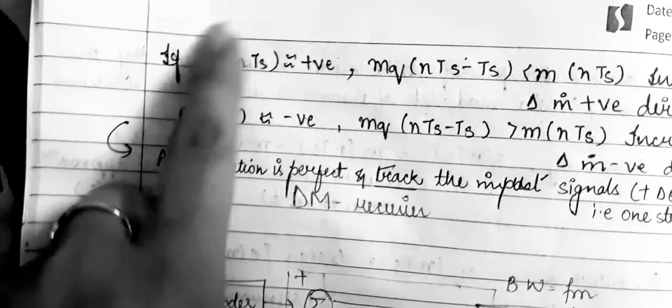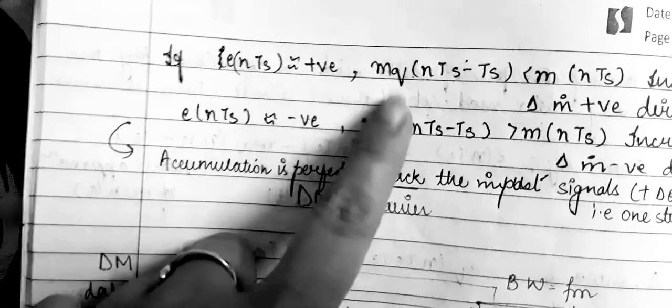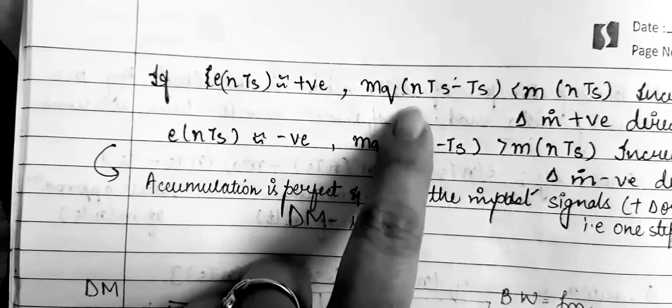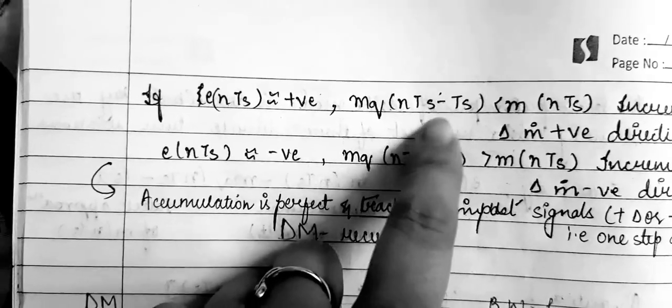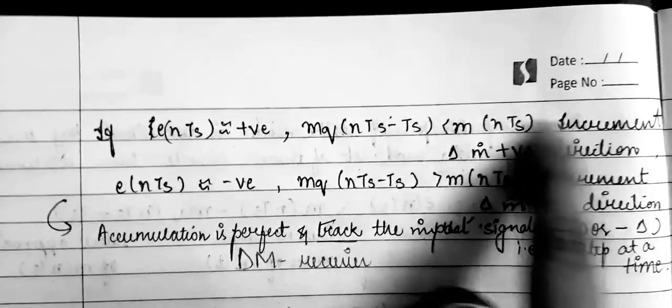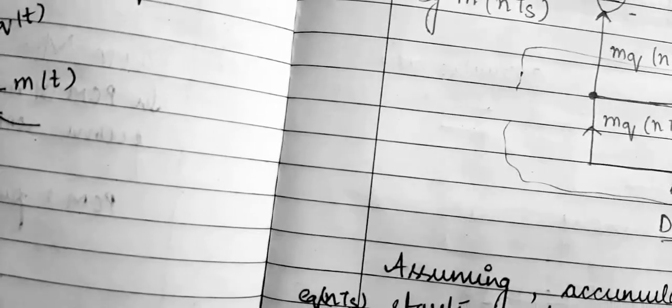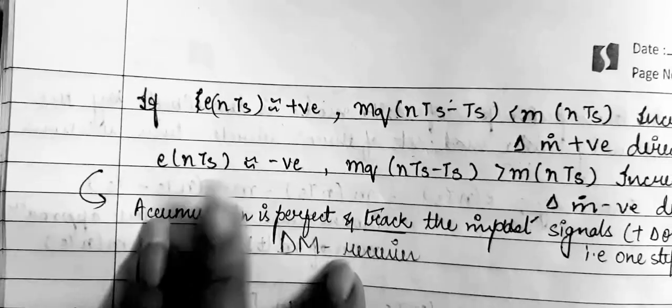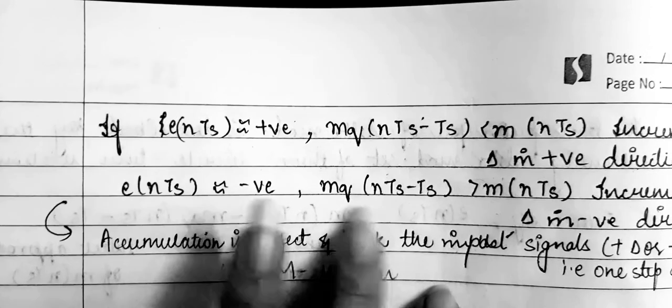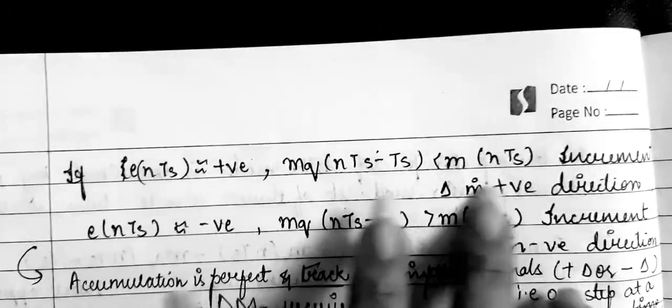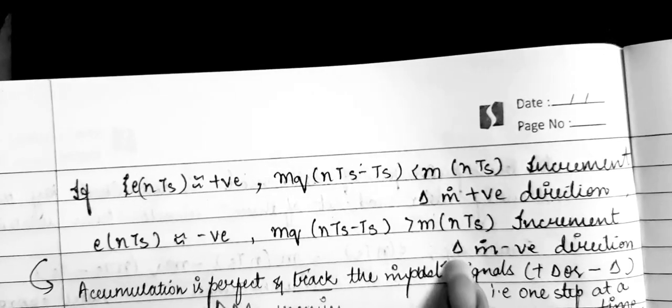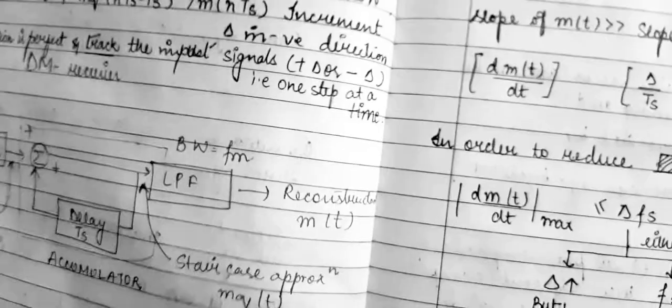If the error signal e(nTs) is positive, the approximate sample version mq(nTs minus Ts) is less than m(nTs), and there will be an increment in the delta function in the positive direction. When the error signal e(nTs) is negative, mq(nTs minus Ts) is greater than m(nTs), and there will be an increment of the delta function in the negative direction.